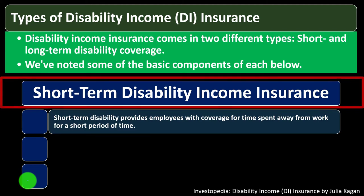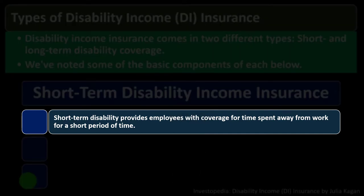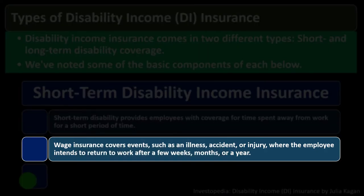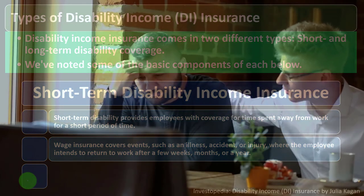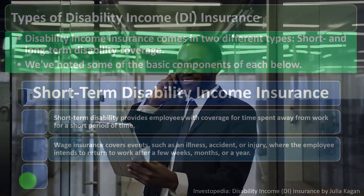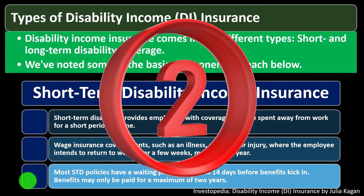Short-term disability provides employees with coverage for time spent away from work for a short period of time. This wage insurance covers events such as an illness, accident, or injury where the employee intends to return to work after a few weeks, months, or years. Most short-term disability (STD) policies have a waiting period of zero to 14 days before the benefit kicks in. Benefits may only be paid for a maximum of two years.